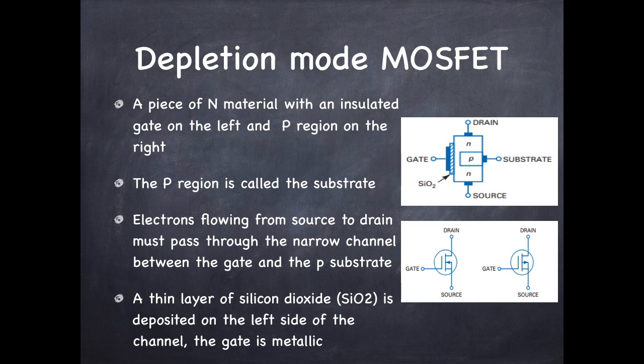If the arrow is pointing inside, that is the current is flowing from source to drain, then it is P channel MOSFET. When the current flows from drain to source it is N channel MOSFET.